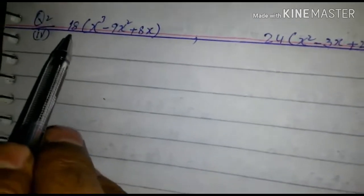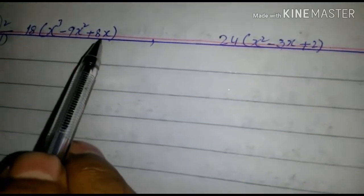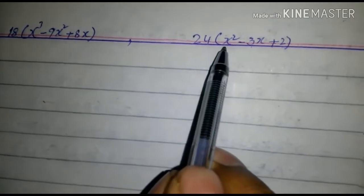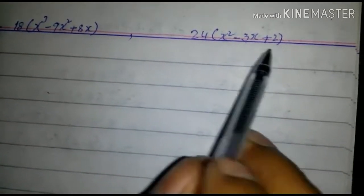Today we are going to solve a question: find the HCF of 18(x³ - 9x² + 8x) and the second expression is 24(x² - 3x + 2). Let's solve this.